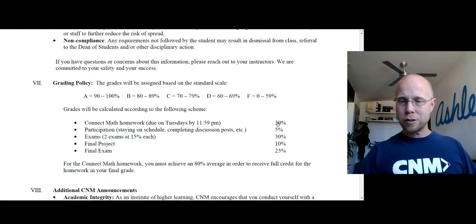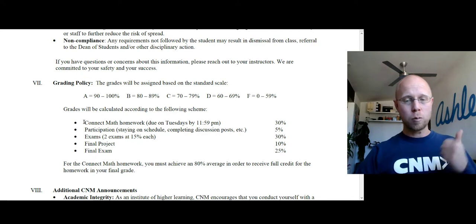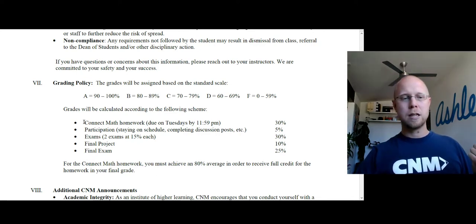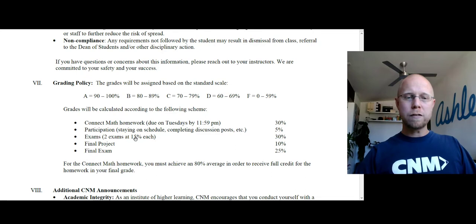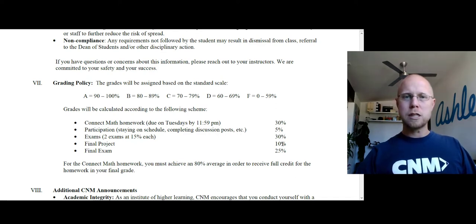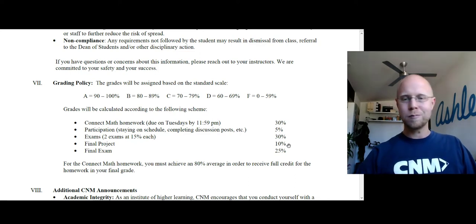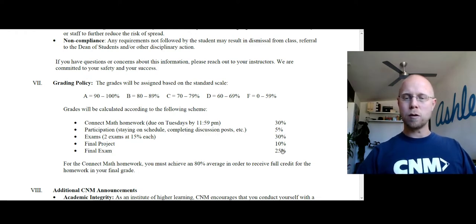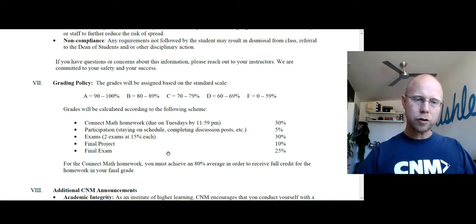Here's the overall layout: homework is 30%, participation is just 5%, and we have two midterm exams at 15% each for 30% total, which matches the weight of the homework. We're going to have one project towards the end of the semester worth 10% of your grade — it's a pretty short project and shouldn't take most people more than a few hours, so don't freak out about having some giant project hanging over you. And lastly, we have a final exam the last week of class worth 25% of your grade.